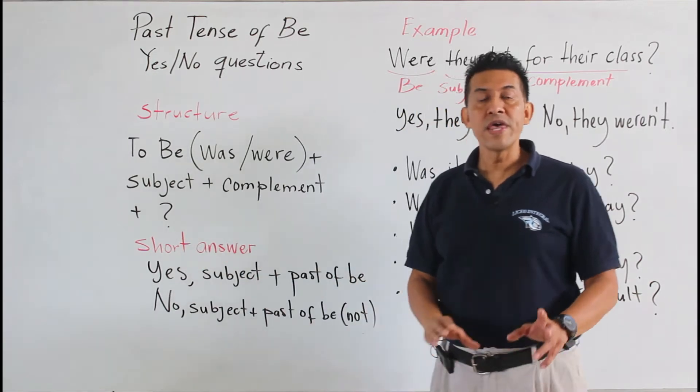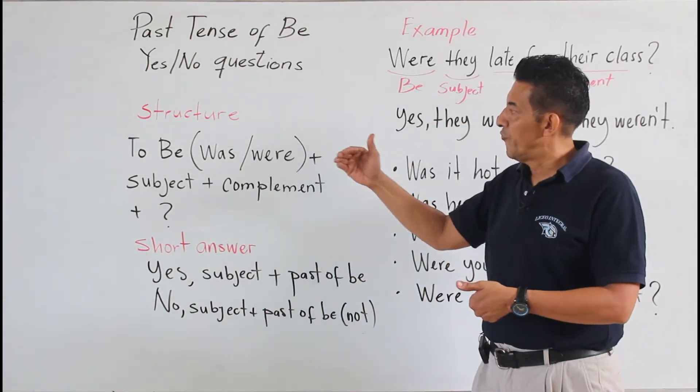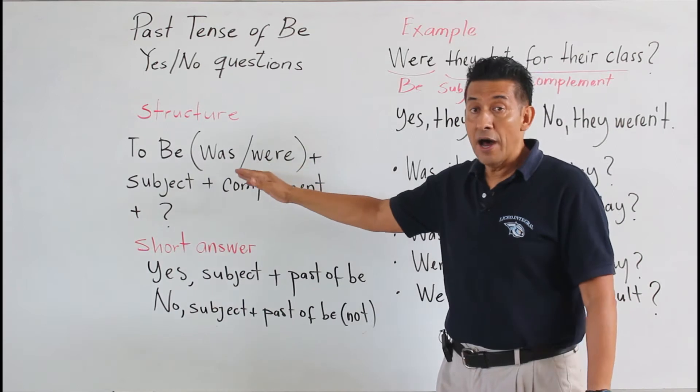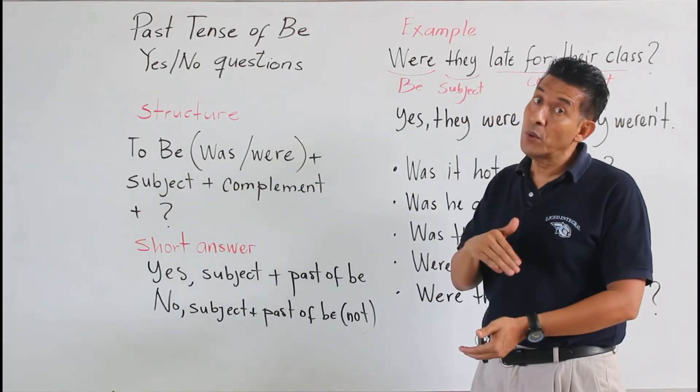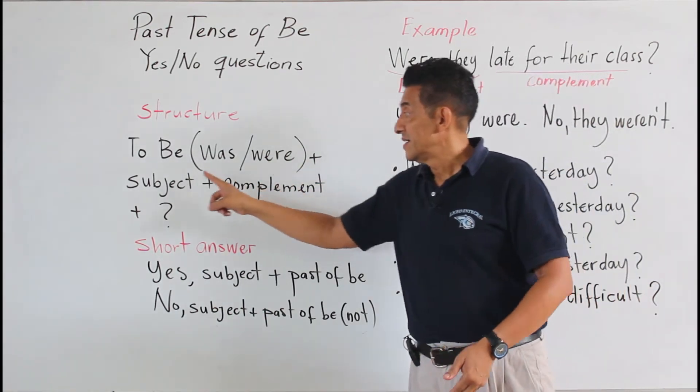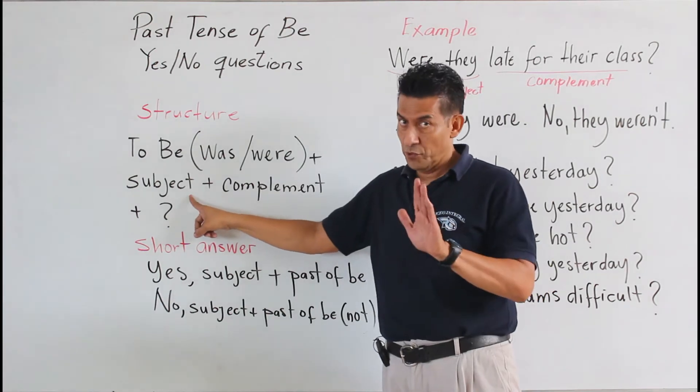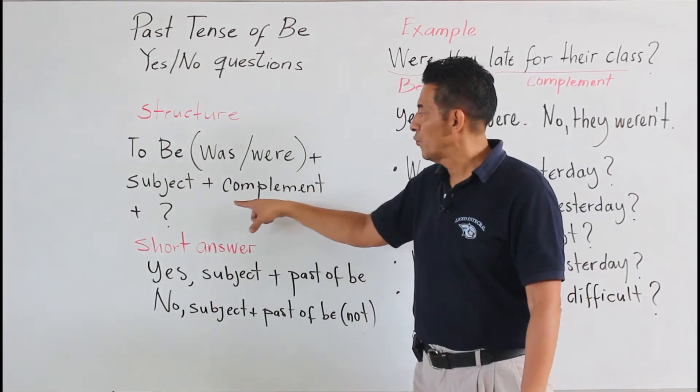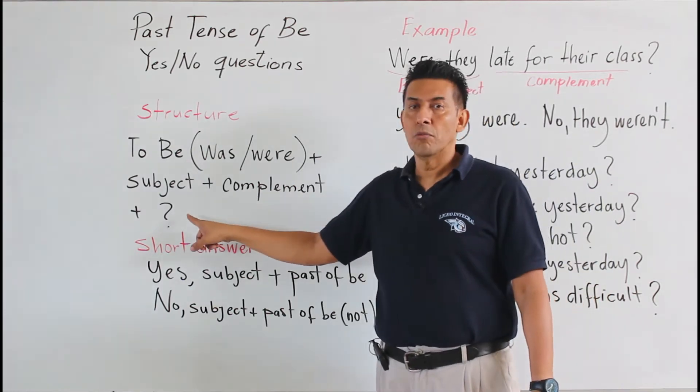We start with the verb be, which is was or were. It will depend on the subject. So we need to be careful on that, and we have to add a complement and a question mark.